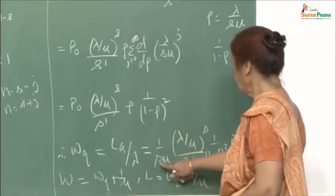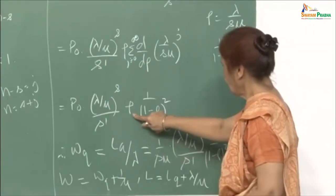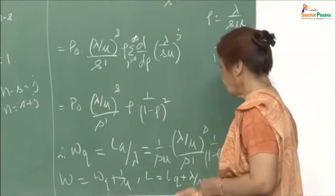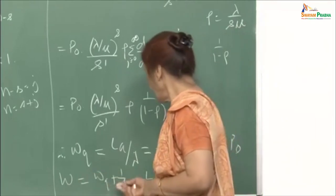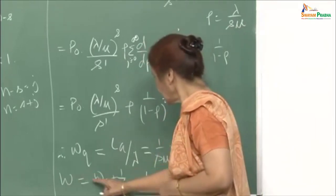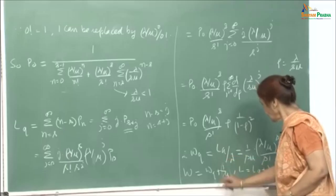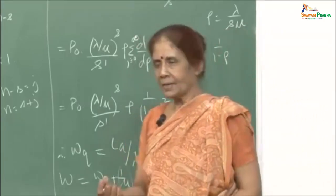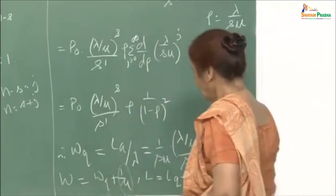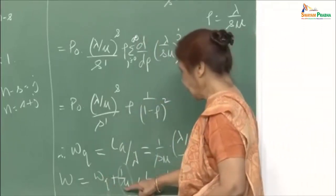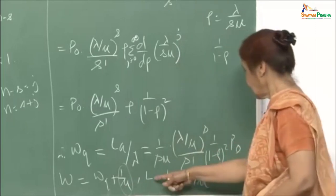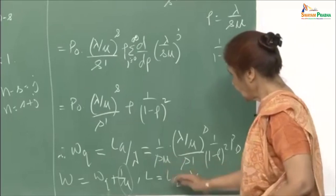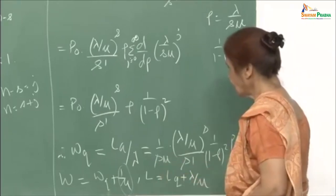Then W = W_q + 1/μ, because your departure from service is one at a time — so the difference between W and W_q is one service time 1/μ, not 1/(S·μ). Similarly, L = L_q + λ/μ. Keeping that in mind, you have all these relationships.